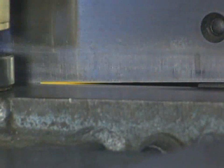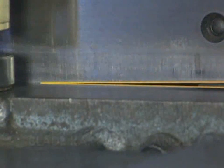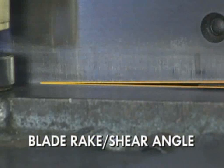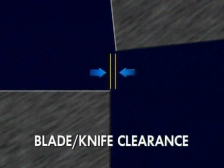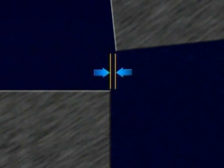The angle at which the upper and lower blades are aligned with each other is called the blade rake or shear angle. The distance between the upper and lower blades is known as the blade or knife clearance. Knife clearance is essential for proper shearing and is modified for different material thicknesses and strengths.